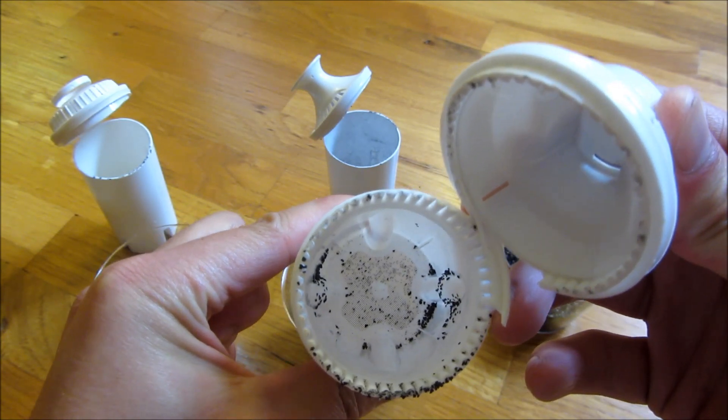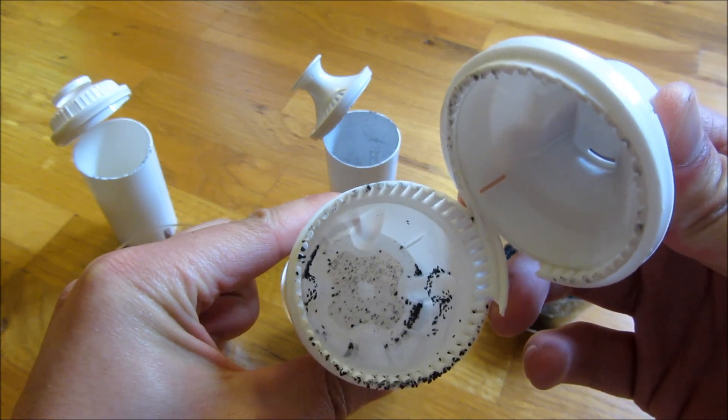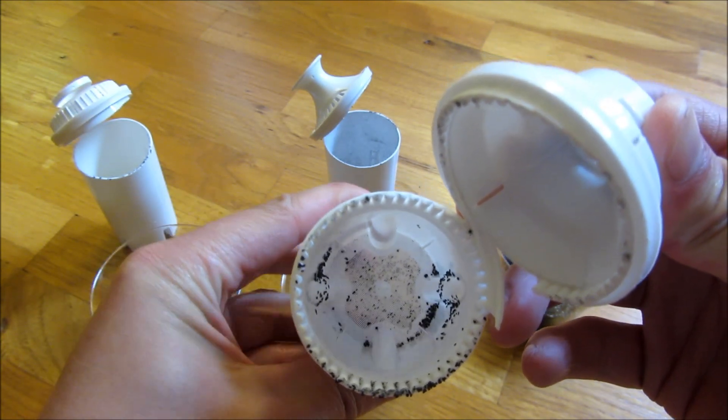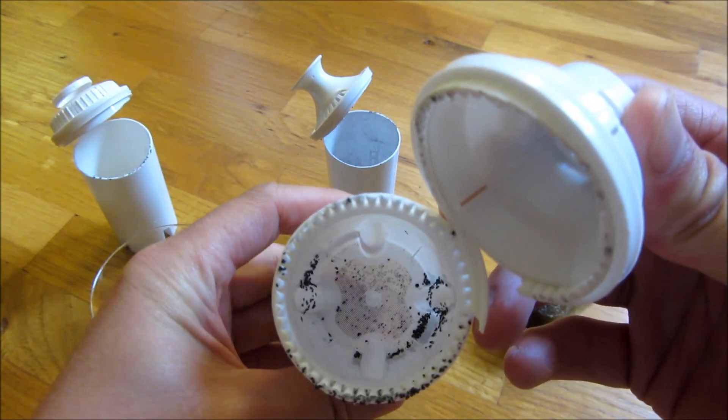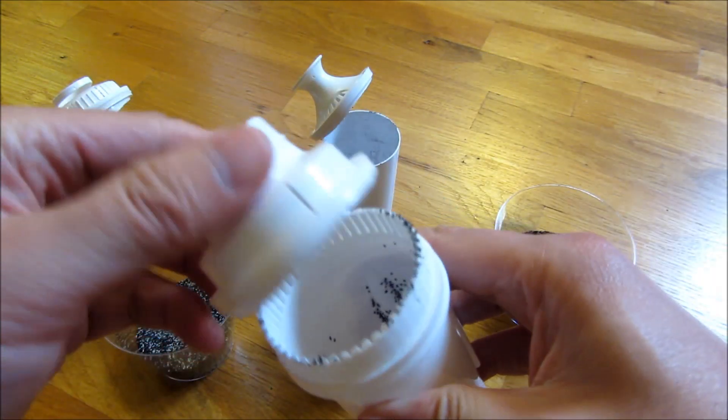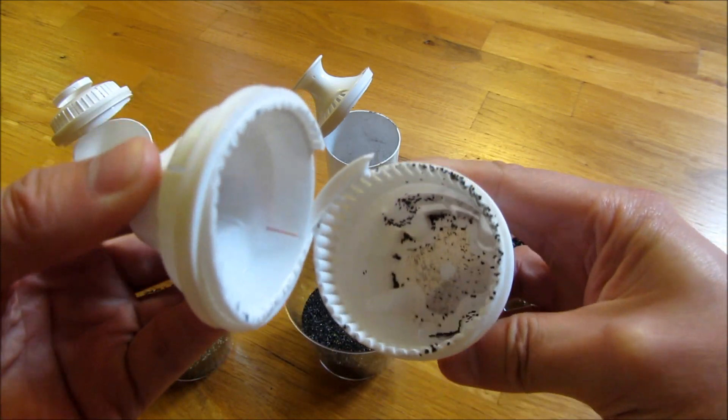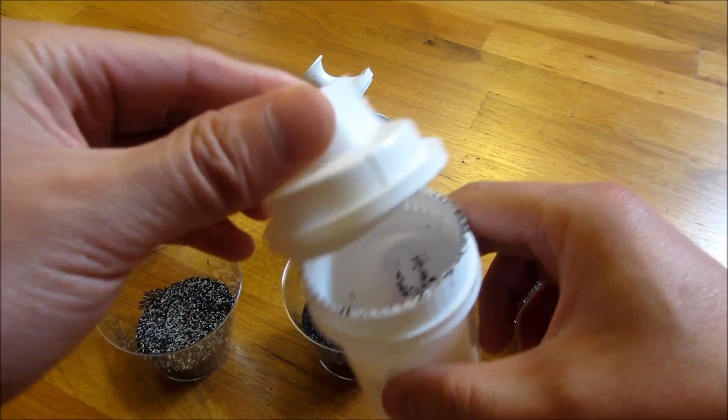And now to the Target. So the Target, you can see the sieve or strainer at the bottom here. See my fingers through it. And this is the Target version.